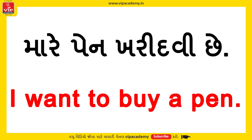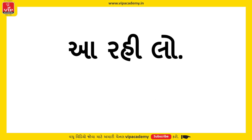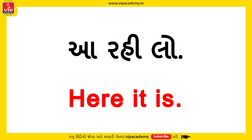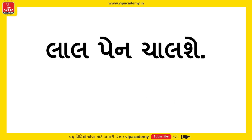Suppose the pen is within reach — in English, you say 'here it is.' 'Here it is' means the item is right here. For example: 'Here is the pen.' And if the pen is low or not at hand, you'd say 'the pen is low.'